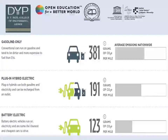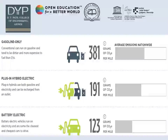Battery electric vehicles run on electricity and are some of the cleanest and cheapest cars to drive, with an emission of 123 grams of CO2 per mile. So comparatively, the battery electric vehicle emits less carbon. In addition, if it is a solar electric vehicle, it is even more beneficial because the electricity generated with the help of solar energy is more sustainable and cleaner compared to conventional electric energy sources. So battery electric vehicles are advantageous, but solar battery electric vehicles are most advantageous.